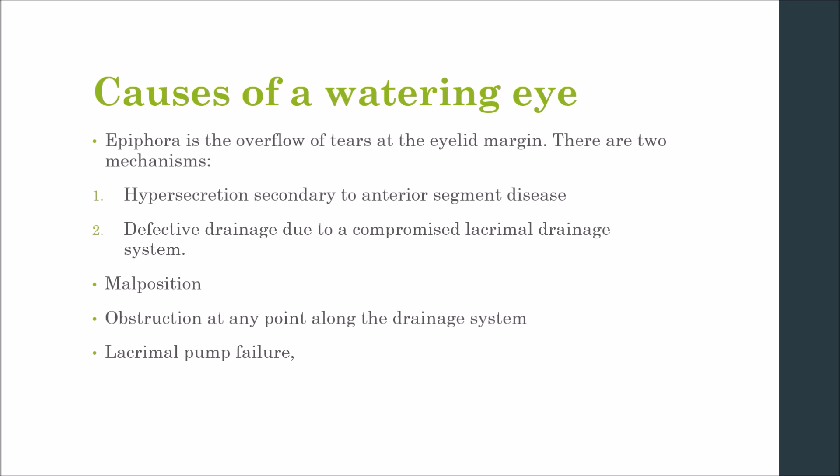Hypersecretion secondary to anterior segment disease includes conditions such as dry eye, paradoxical watering, or inflammation. In these cases, watering is associated with symptoms of the underlying cause and treatment is usually medical. It is common for a watering eye to be caused by reflex hypersecretion secondary to a dry ocular surface. Defective drainage may be due to malposition — for example, ectropion of the lacrimal puncta — obstruction at any point along the drainage system from the punctal region to the valve of Hasner, or lacrimal pump failure due to lower lid laxity or weakness of the orbicularis muscle, such as in facial nerve palsy.